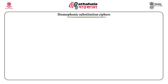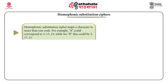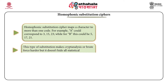The first topic of discussion is homophonic substitution cipher. In this cipher, we substitute more than one code for each character. For example, character A can be replaced by 3, 5, 7, or 13. Every time A occurs, it will have a new code. Similarly, B may be substituted with 4, 6, 8, or 10. This type of substitution avoids cryptanalysis.